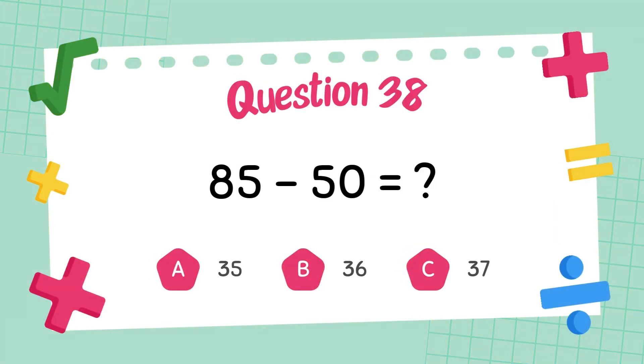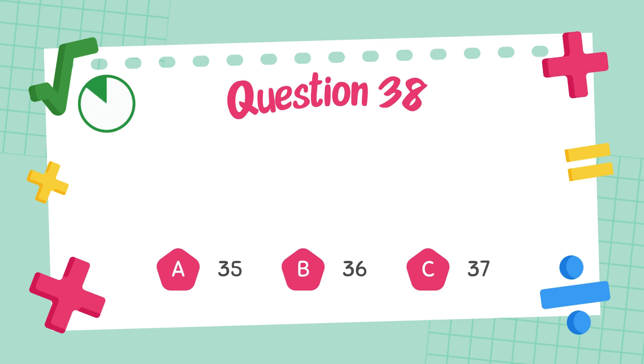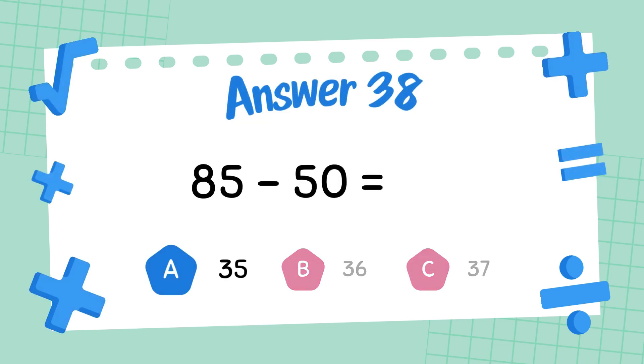What is eighty-five minus forty-nine? The answer is thirty-five.